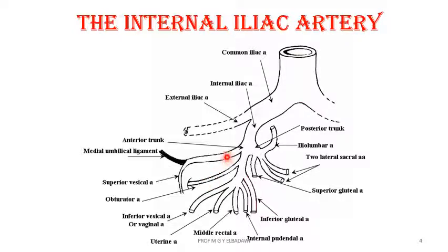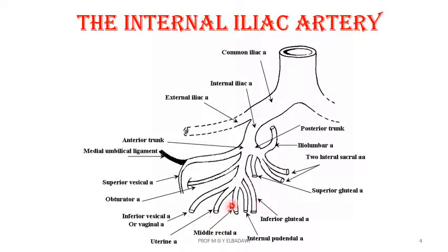The visceral branches are the umbilical artery — the fetal umbilical artery — which gives the superior vesical and terminates by forming the medial umbilical ligament reaching the umbilicus. It also gives the inferior vesical in the male, which corresponds to the vaginal artery in the female, the uterine artery in the female only, and the middle rectal arteries. These are the visceral branches of the anterior division of the internal iliac artery.